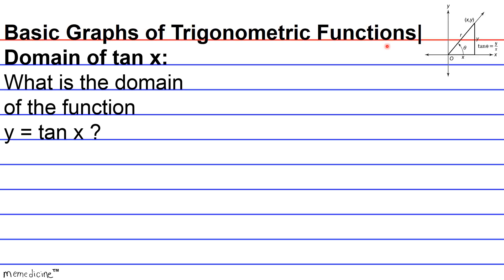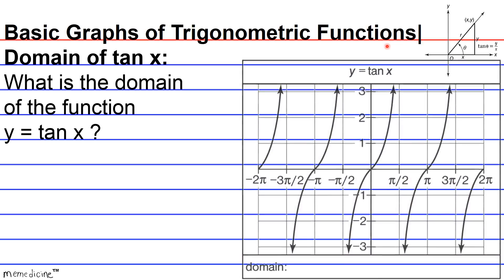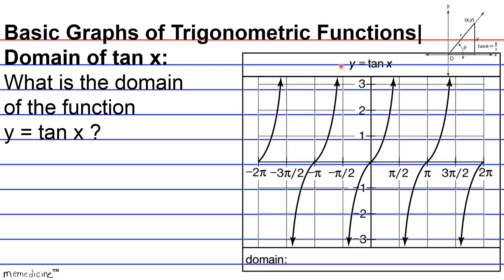Here is a graph of y equals the tangent of x. The domain — the independent variables along the horizontal axis — includes all real numbers except odd multiples of π/2, for the reasons discussed before. Because π/2 is the radian value of 90 degrees, at 90 degrees there is by definition a vertical asymptote where the dependent outputs travel toward positive infinity and negative infinity. Similarly, 3π/2 is the radian value for 270 degrees — another vertical asymptote, undefined.